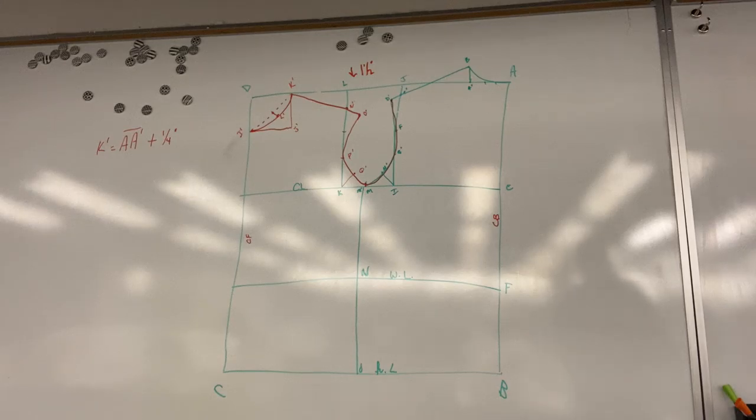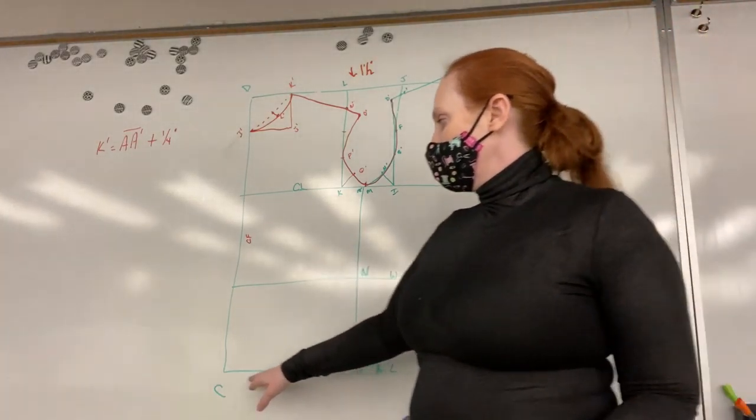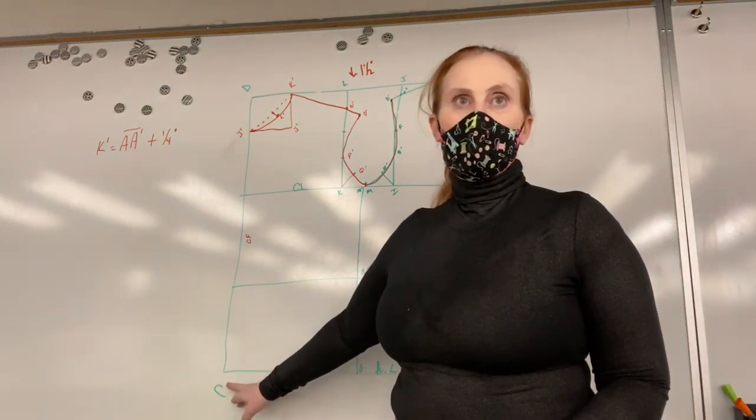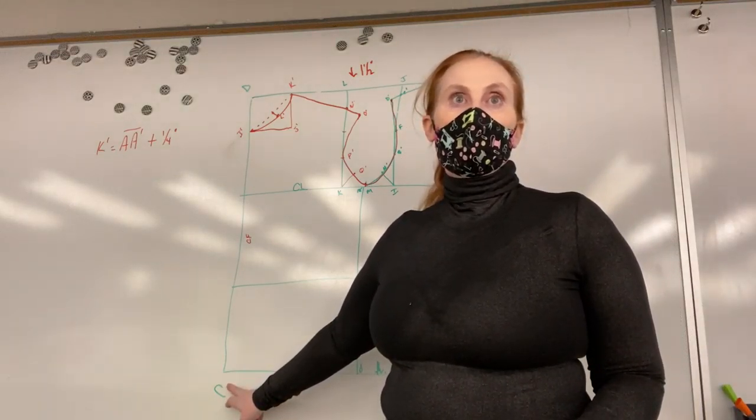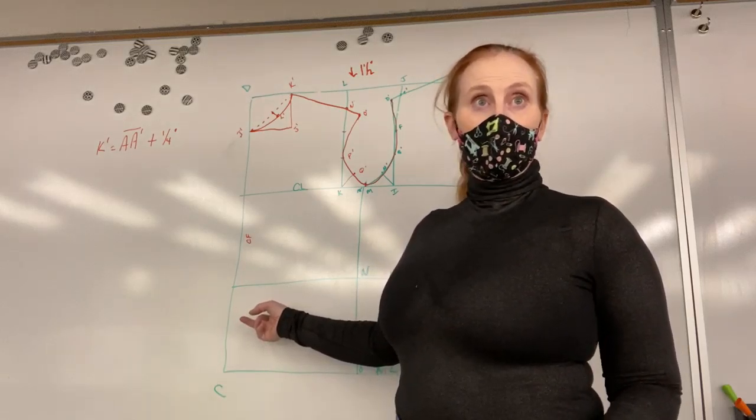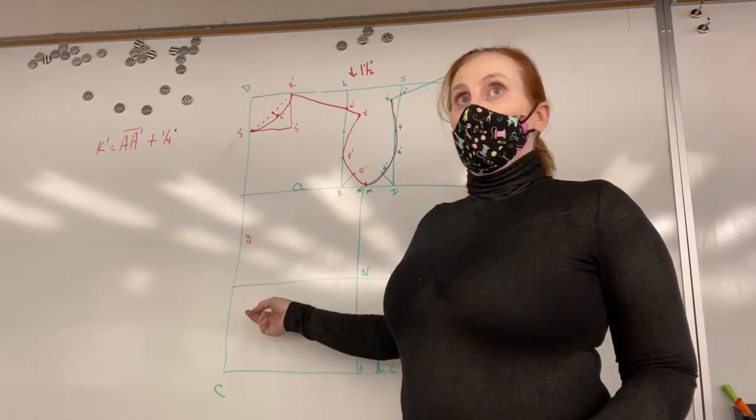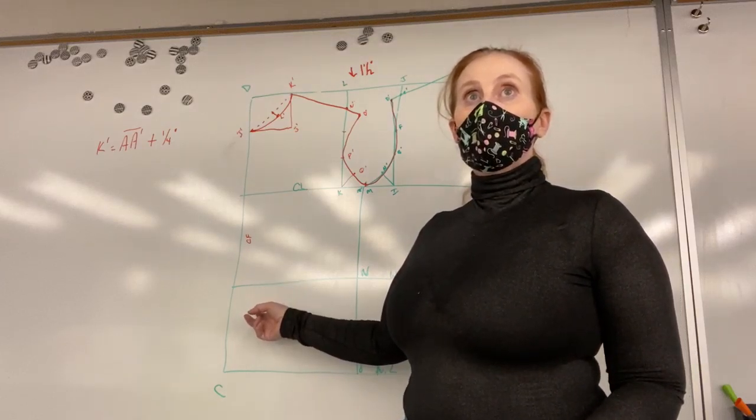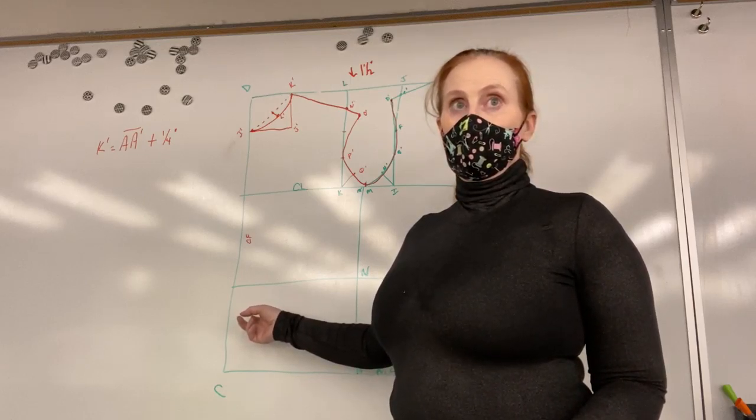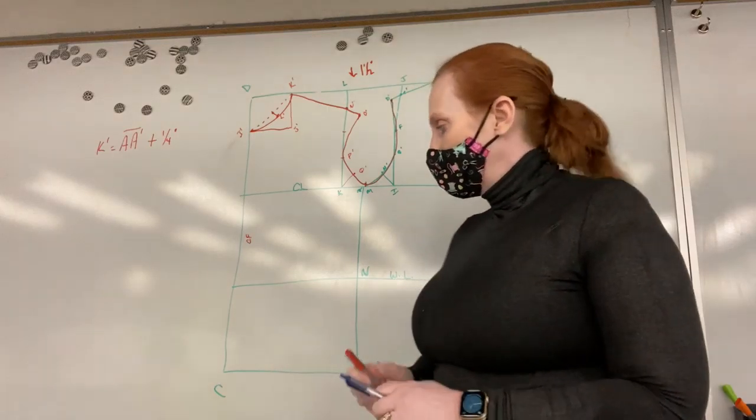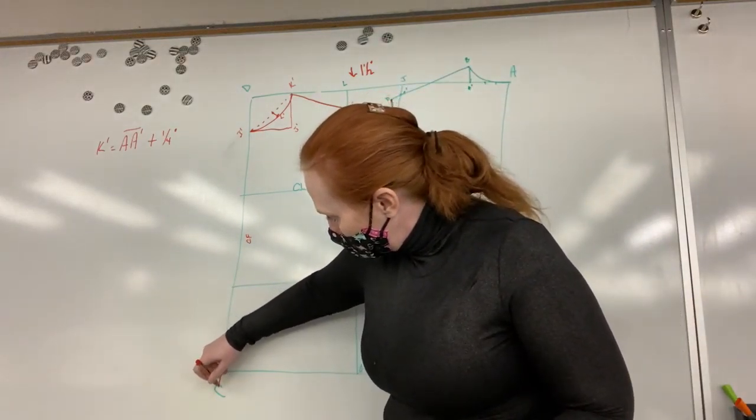Now, the only other thing the book has us do on this is it has us adjust the waistline down here on the front of the sloper and drop it about an inch. But I have never found this necessary because this is a huge square box on a body. If you are really busty or if you have a really large belly, you might want to add this down in the bottom.